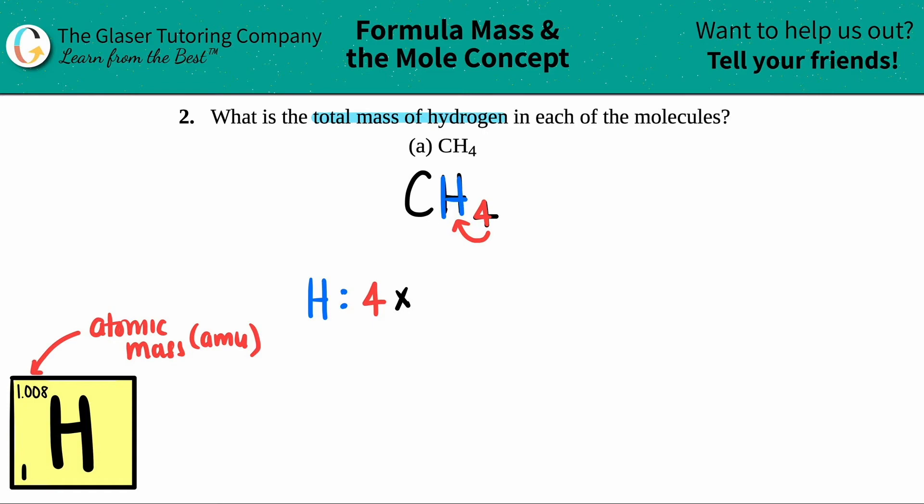So I'm just going to take that number 1.008 and times it by four because I have four of them. That should get us the total mass for hydrogen. So four times 1.008, I get 4.032 amu and that's it. Easy peasy guys, what do you think? Let me know in the comments.